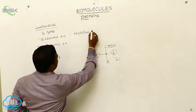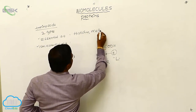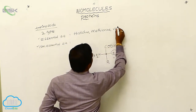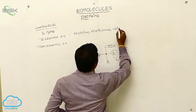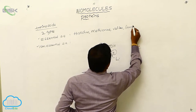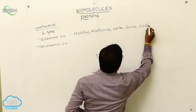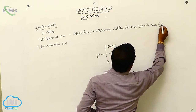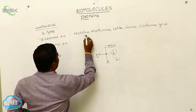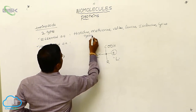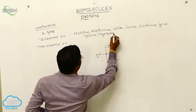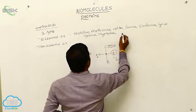Examples of essential amino acids include: histidine, methionine, valine, leucine, isoleucine, lysine, tyrosine, tryptophan, etc.